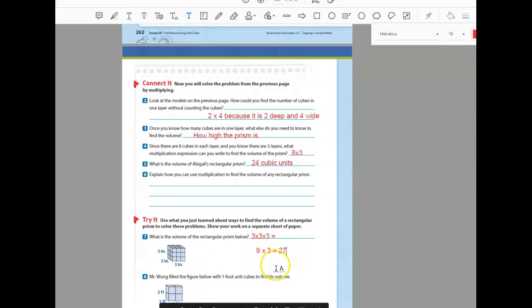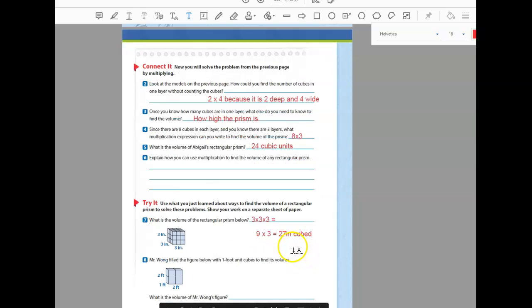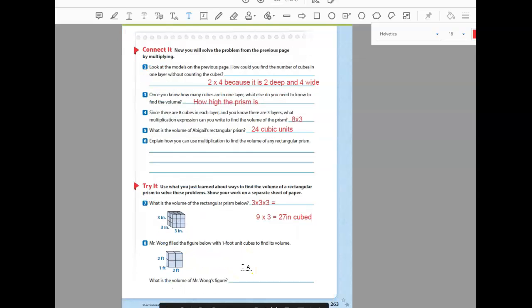And this one says it's inches, so I'm going to write inches cubed because I can't make that little three when I'm typing. Mr. Wong filled the figure below with one-foot cubes to find its volume. What is the volume of Mr. Wong's shape? Two times two times one equals four feet cubed. Pretty easy.